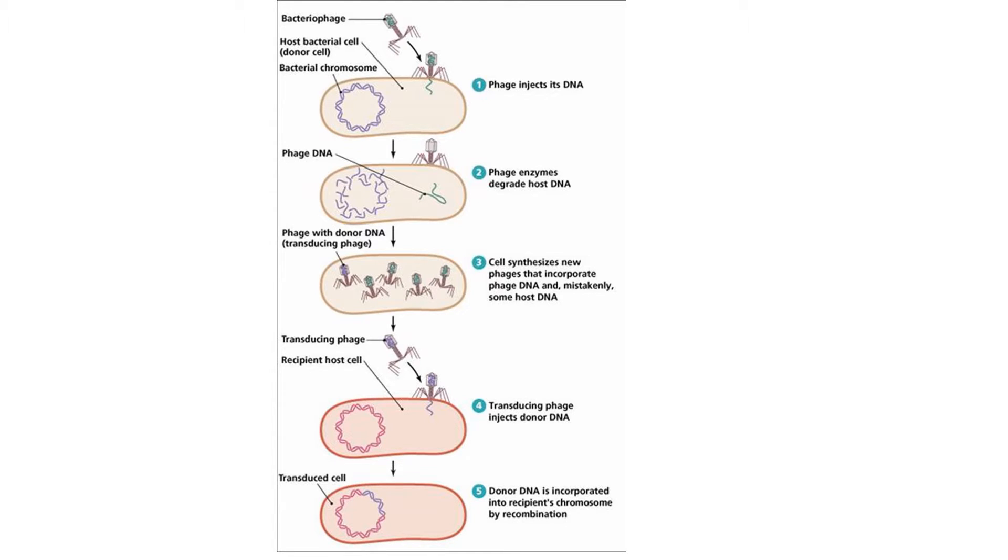This TinyTeach is going to cover transduction, one of the three methods of genetic recombination in bacteria. Transduction is the transfer of bacterial DNA from a donor bacterium to a recipient bacterium via a bacteriophage, or a virus that infects bacteria.